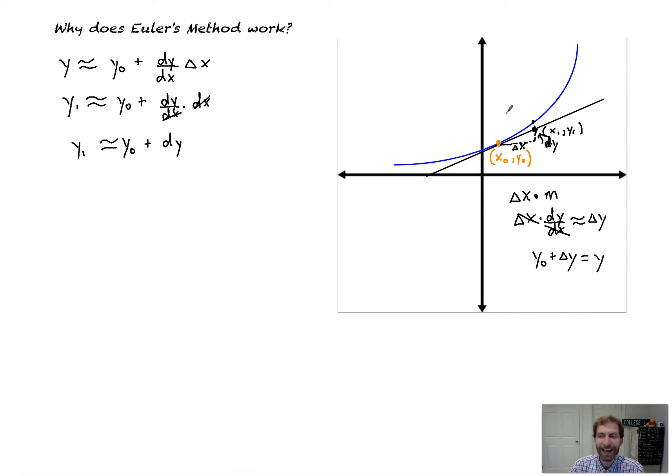Now dy is not the actual delta y. Actual delta y is this change from this point to the point on the curve. But it's a decent approximation. So that's what we're approximating. And that's the key idea there, that dy dx times dx is approximately delta y. It's not exactly it.